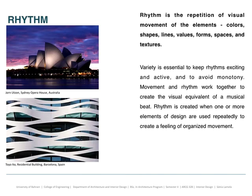Now we go to rhythm. Rhythm is an essential principle acquired by the repetition of visual movements of elements — colors, shapes, lines, values, forms, spaces, and textures. Variety is essential to keep the rhythm. Without variety, we couldn't have this active movement to avoid something that is dull and monotonous. When we think about movement and rhythm, they have to work together as a kind of musical composition that can only be achieved when one or more elements are brought together and used repeatedly to create a feeling of specific movement. We have two different shapes here that give us this feeling.